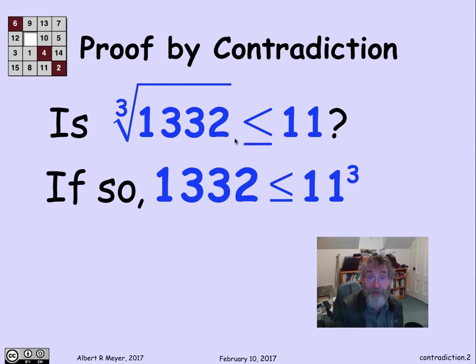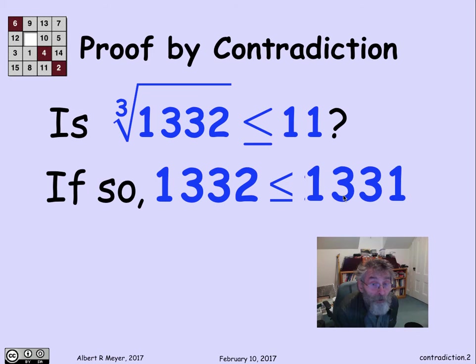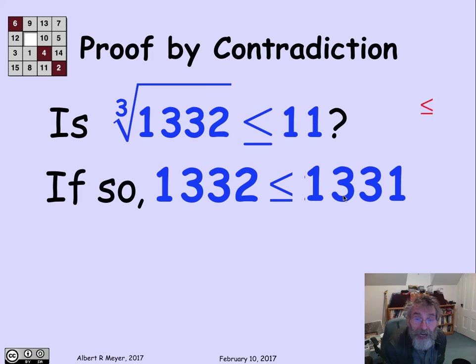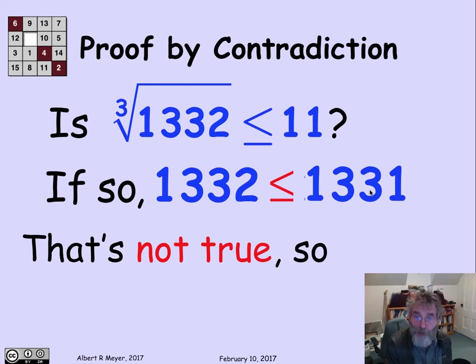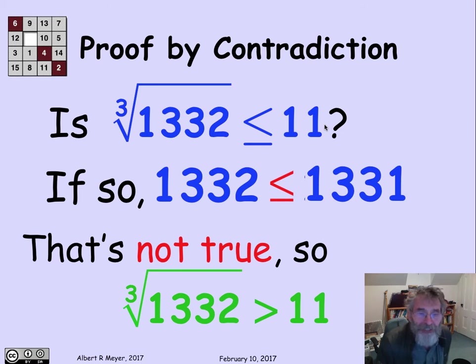So if I cube both sides, I'm saying if this holds, then the inequality 1,332 less than or equal to 11 cubed must hold. Now, computing 11 cubed is a lot easier than computing the cube root of 1332. In fact, the cube of 11 is easy to see as 1,331. Hey, wait a minute. Look what's happened. I've just concluded that this bigger number is less than or equal to that smaller number under the assumption that this inequality held. It's absurd. And that absurdity means that the original hypothesis must have been false. So in fact, it must be that the cube root of 1,332 is greater than 11.